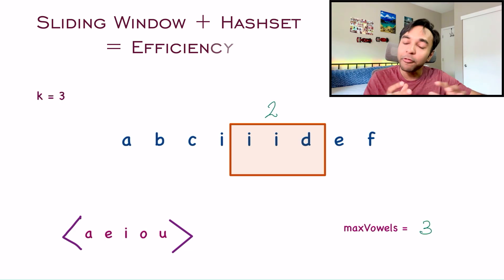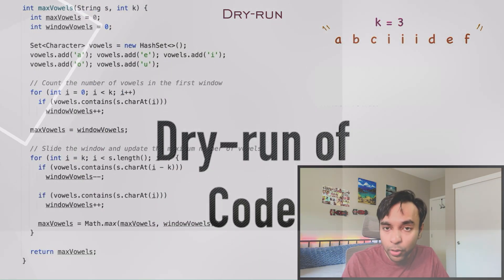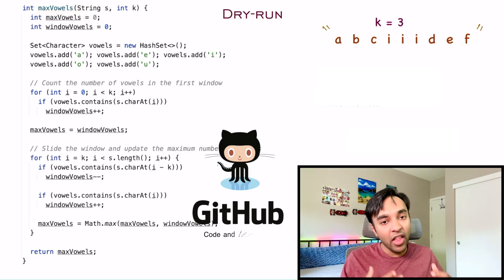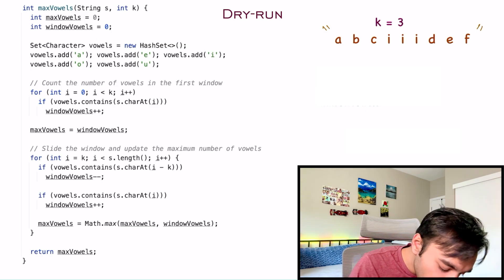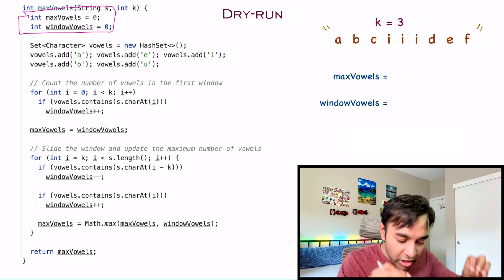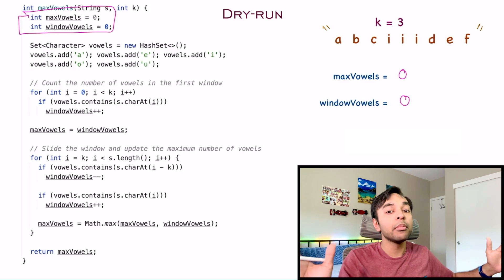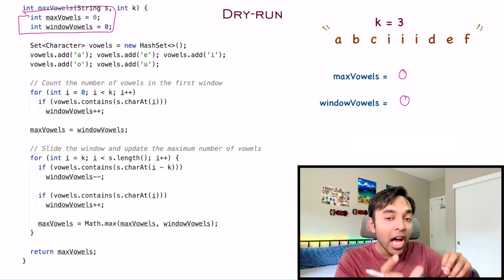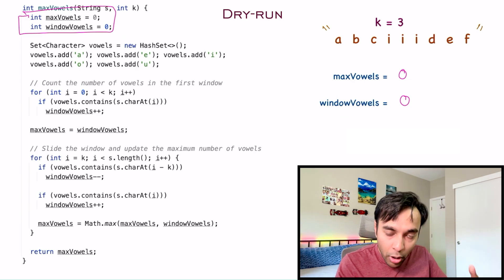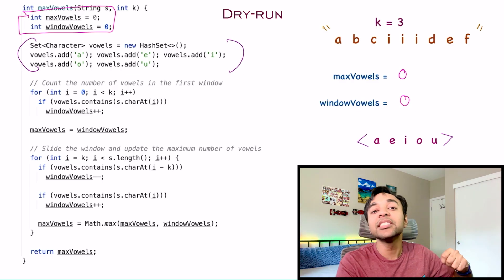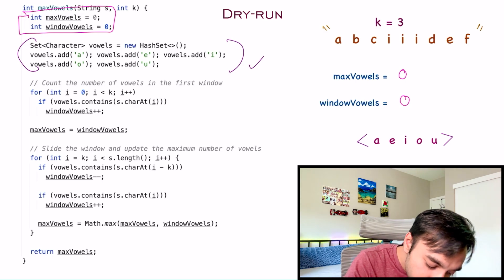Now let us quickly do a dry run of the code and see how it works in action. On the left side of your screen you have the actual code to implement this solution, and on the right I have a value of k and a sample string that is passed in as an input parameter to the function max vowels. Moving on with the dry run — first of all, we create two variables to store our values: max vowels and window vowels. Right now both of them are zero because we haven't done anything. Max vowels is going to store the maximum number of vowels you are able to find, and window vowels is going to store how many vowels you are able to find in the current window. The next step is to create a hash set that will store all of my vowels, so I can quickly check whether a character is a vowel.